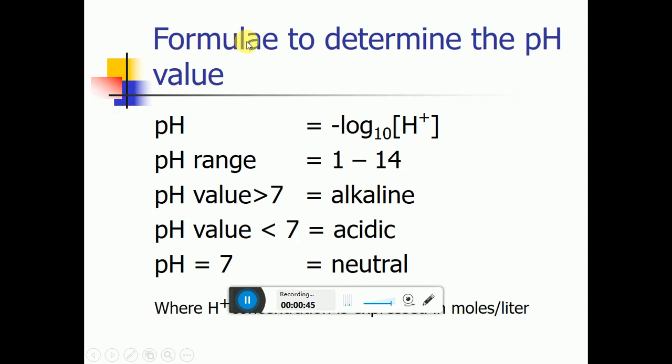The formula to determine the pH value: pH is equal to minus log base 10 of the hydrogen ion concentration. The pH range is 1 to 14. The pH value less than 7 is known as acidic. pH value greater than 7 is alkaline, and pH of 7 is neutral.